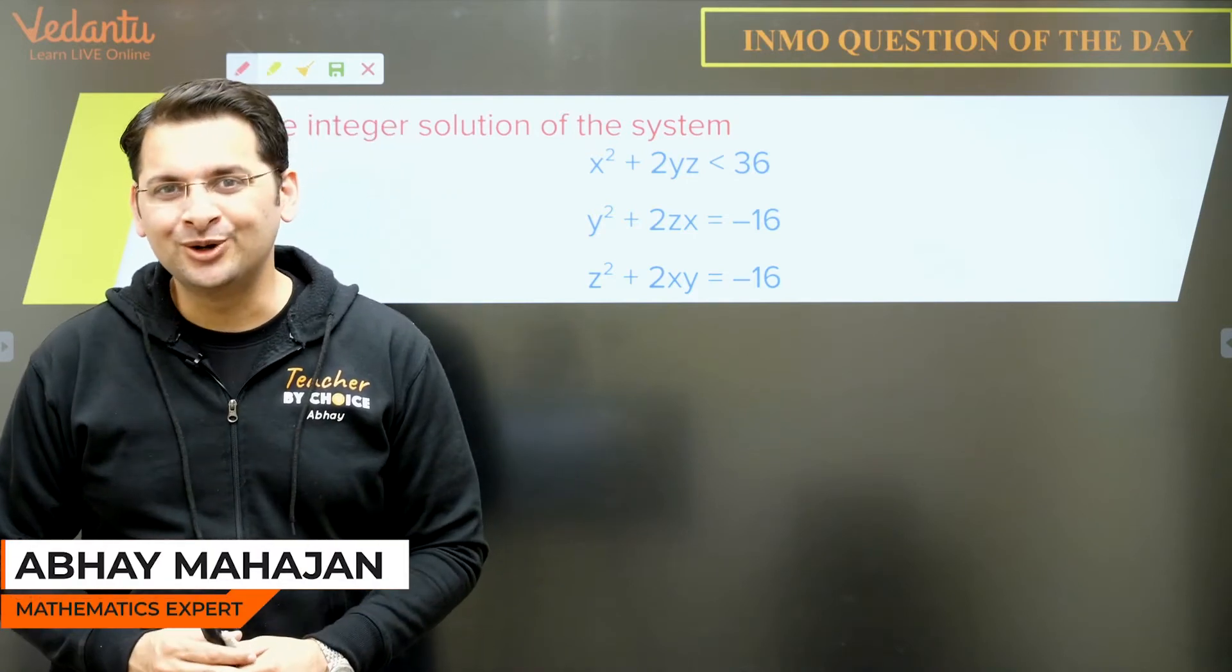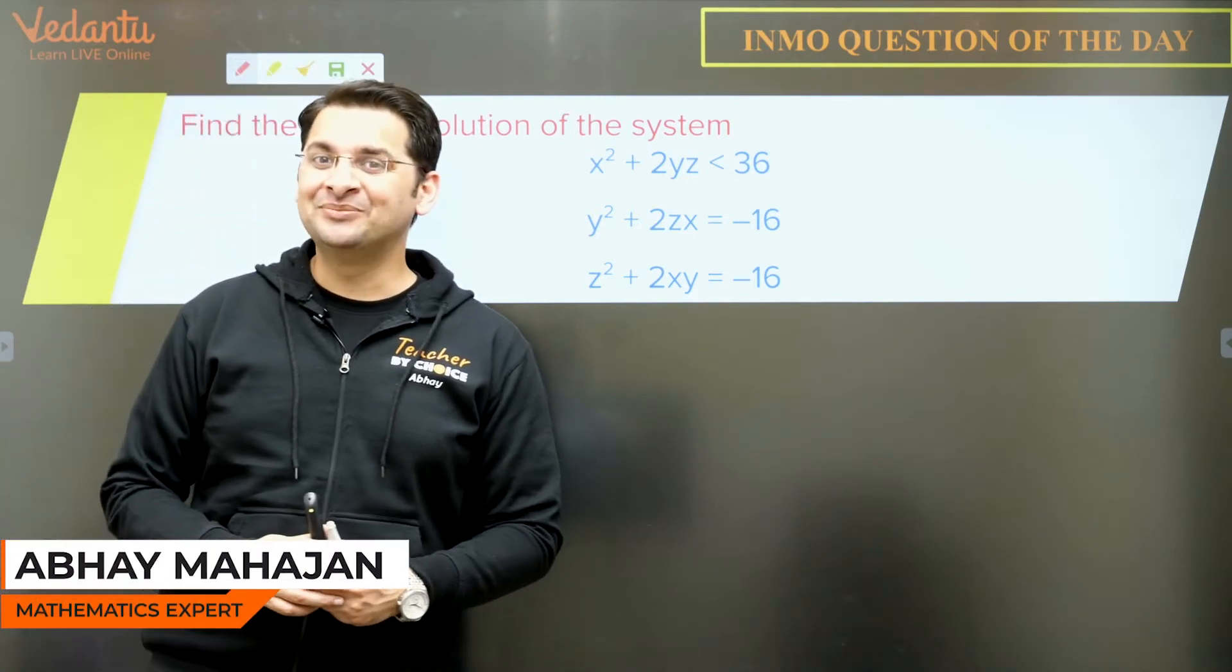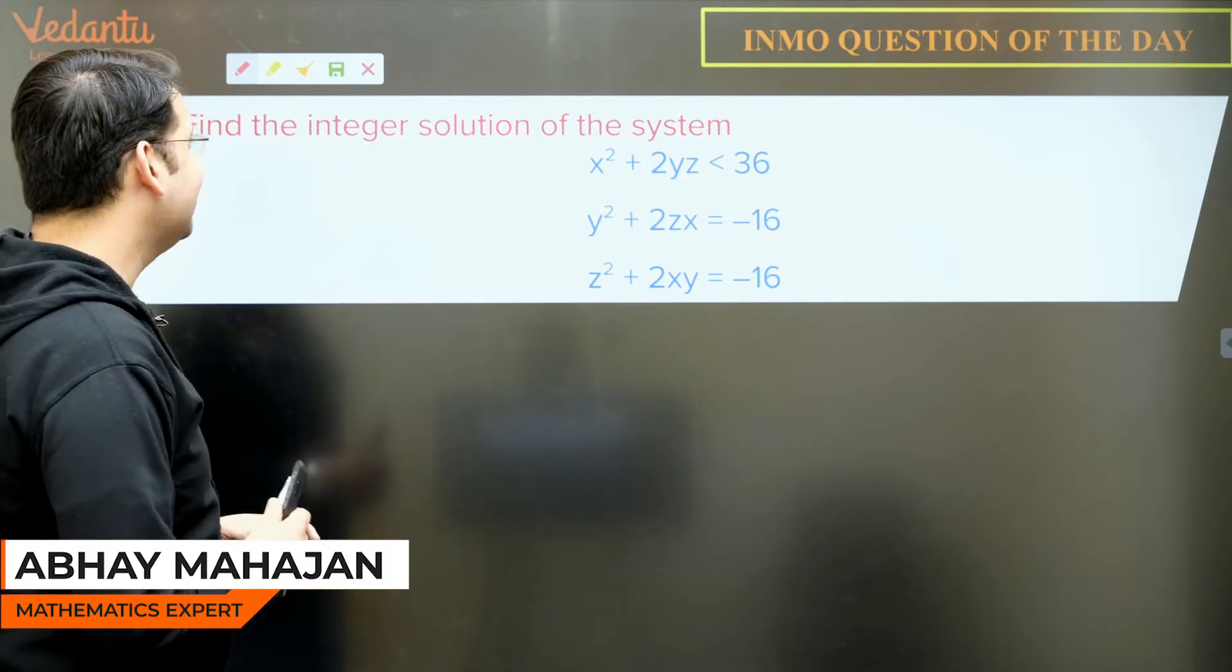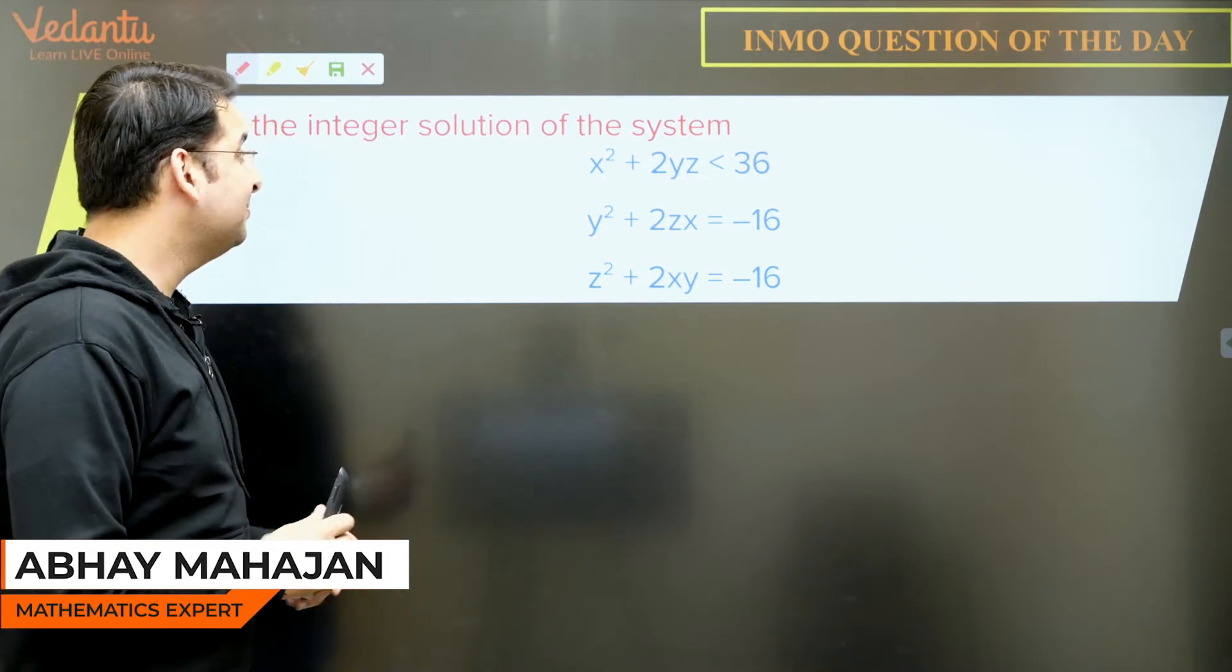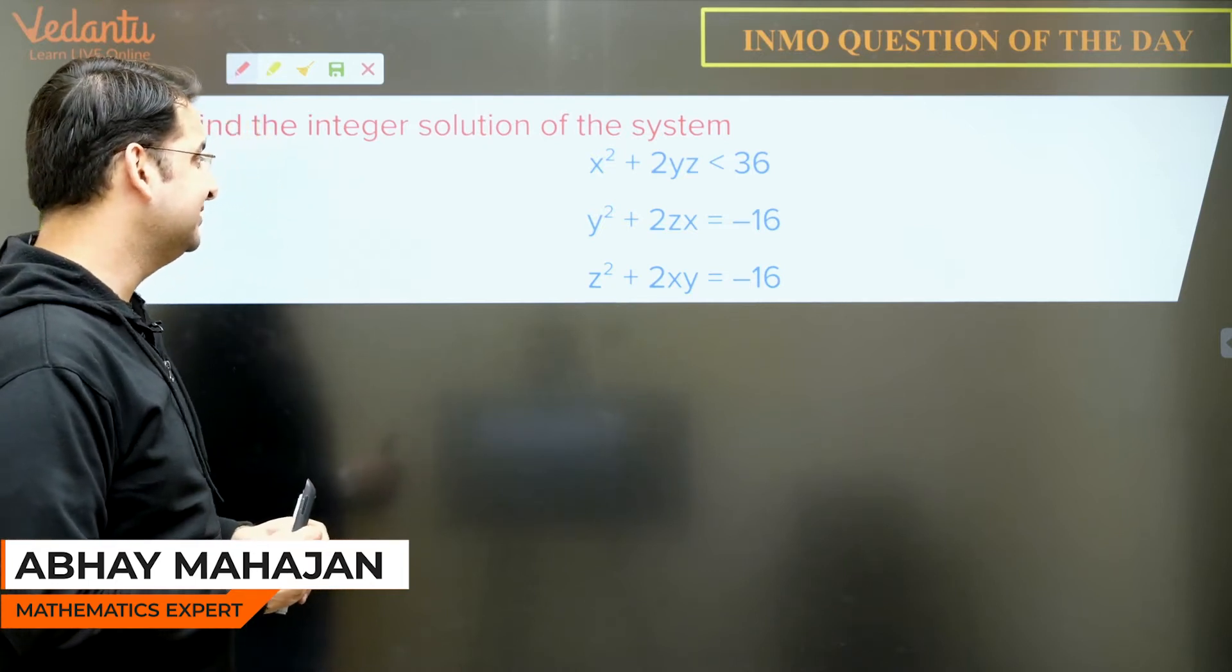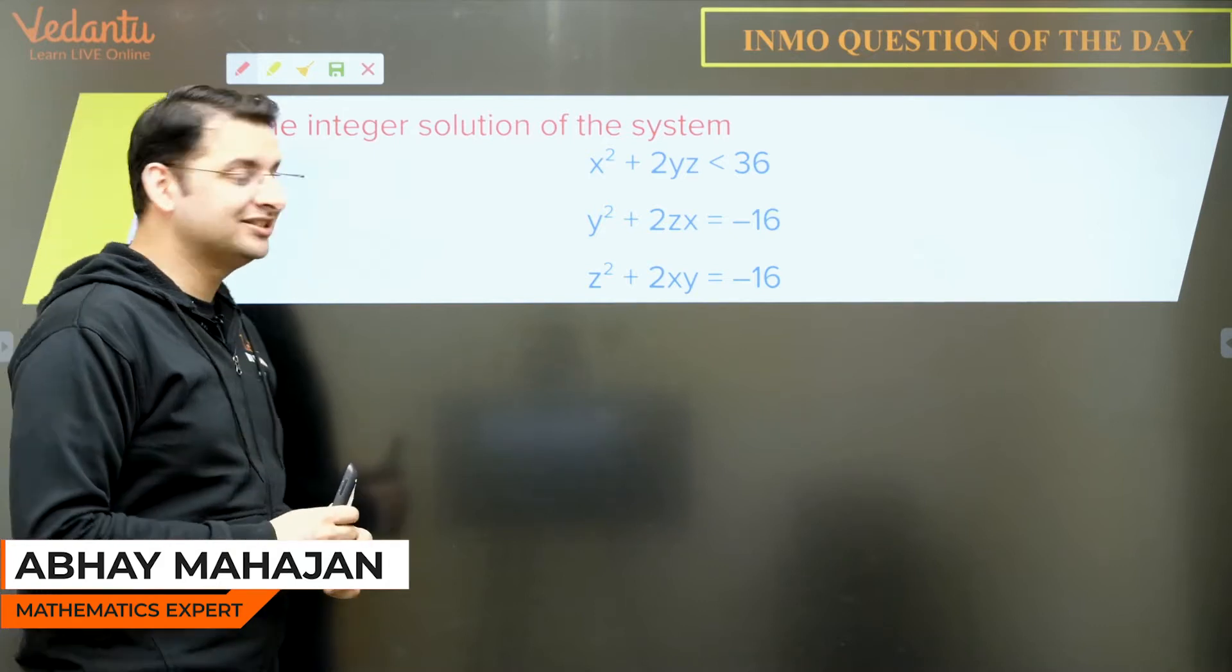Hi all, this is Abhay Mahajan and I welcome you all to this amazing series called INMO Question of the Day. The question of the day is: find the integral solution of the system x² + 2yz < 36, y² + 2zx = -16, and z² + 2xy = -16.